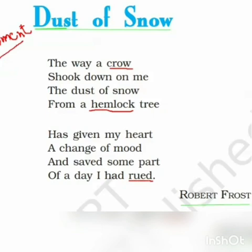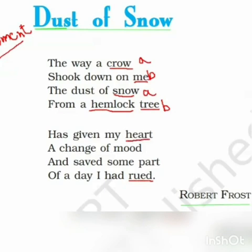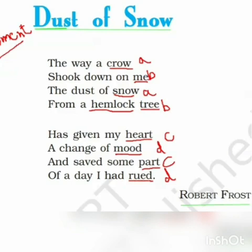Now the rhyme scheme: the word 'crow' rhymes with 'snow' and 'me' rhymes with 'tree' — so the rhyme scheme is A B A B. Then 'heart' rhymes with 'part' — that is C — and 'mood' rhymes with 'rued' — that is D. So the full rhyme scheme is A B A B C D C D.